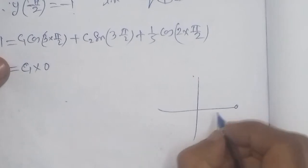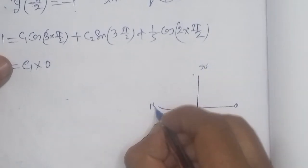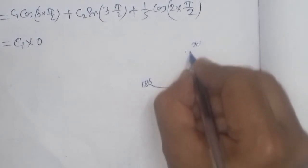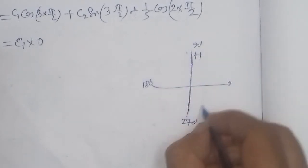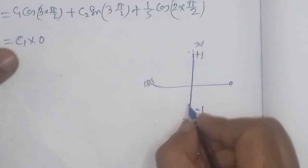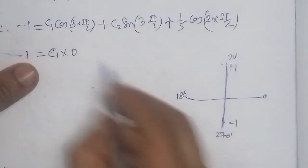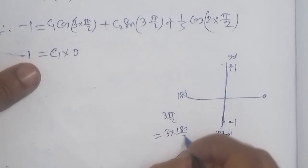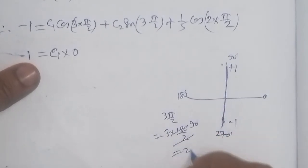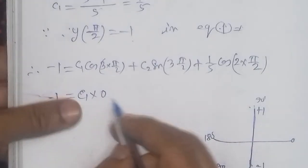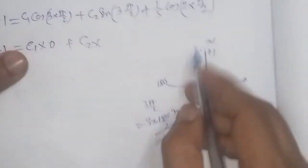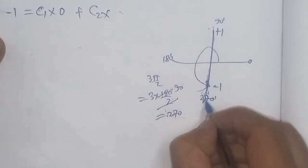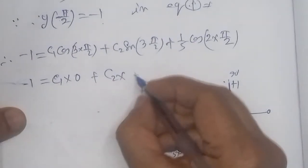From the first condition, we get c1 = 4/5. Now applying the second boundary condition y = -1 when t = π/2. At t = π/2, sin(3·π/2) = sin(3π/2) = -1, since 3π/2 corresponds to 270°, where sine equals -1. The cosine term cos(3π/2) = 0.